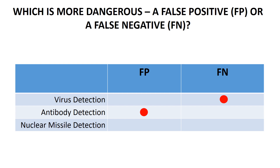For antibody detection, a false positive seems worst because you test positive, appear immune, take risks, and can get infected. For nuclear missile detection, both are serious: a false positive means launching missiles against countries that haven't attacked you, while a false negative means you get nuked. So there is no simple answer — it depends on the application.